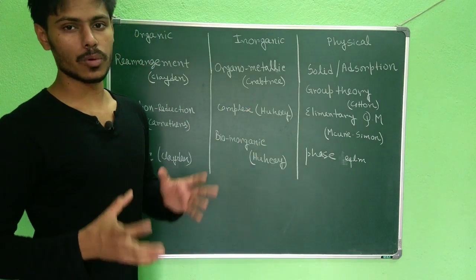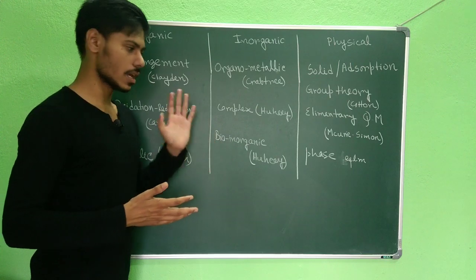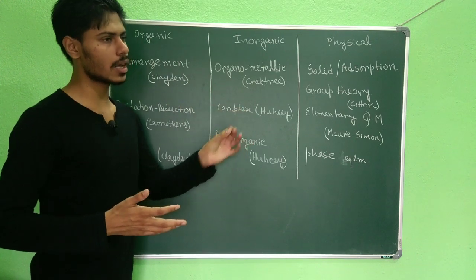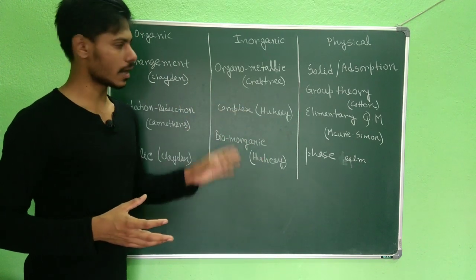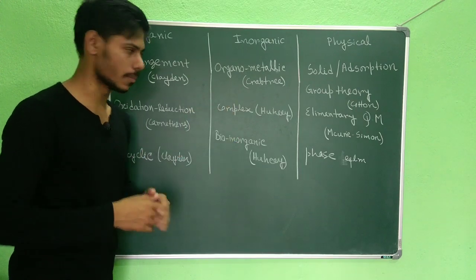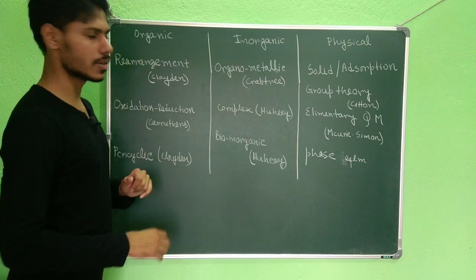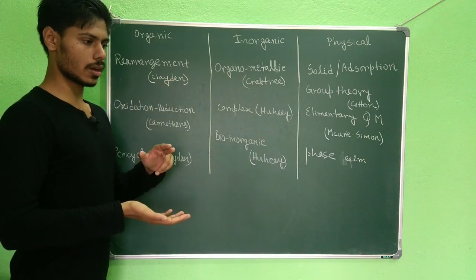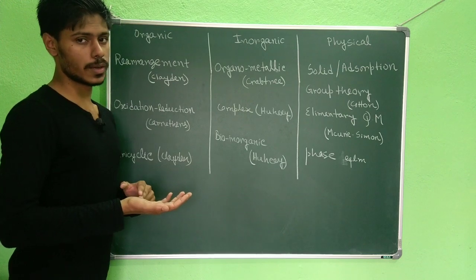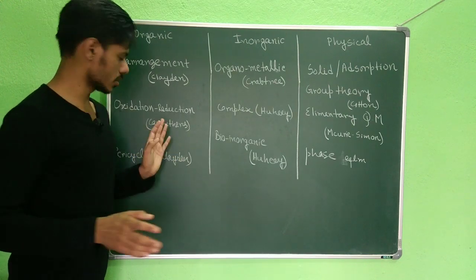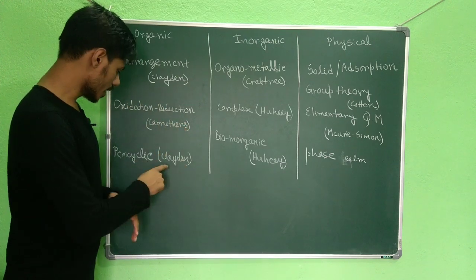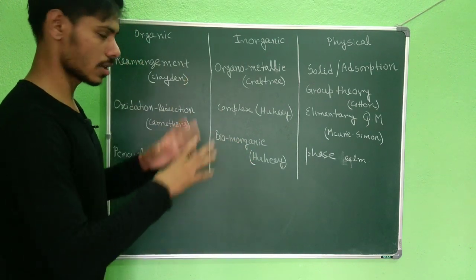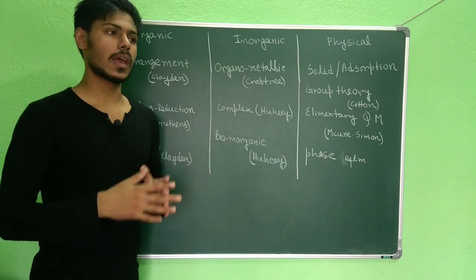Now let me tell you which topics are most important for the CSIR NET exam — topics you absolutely cannot miss, which are relatively easier and are trending every year. For organic chemistry: rearrangements is absolutely important and you should prepare it from Clayden; additionally, the Carey–Sundberg book is very good. Oxidation-reduction is a vital topic, covered well in Carruthers. Pericyclic reactions — again, read from Clayden, where it is very nicely written. These three are vast topics you cannot afford to miss.